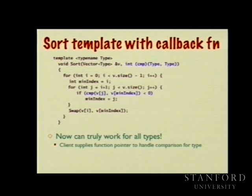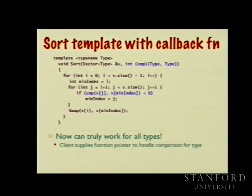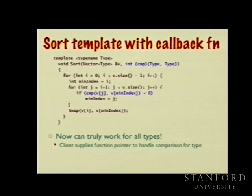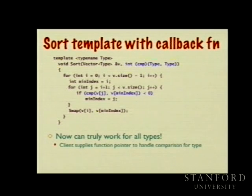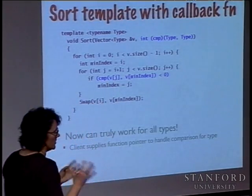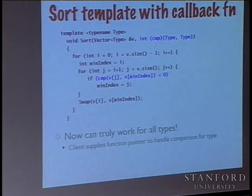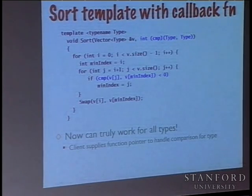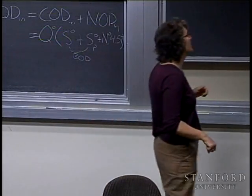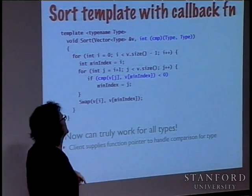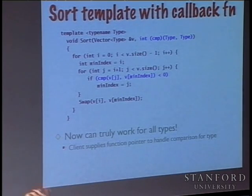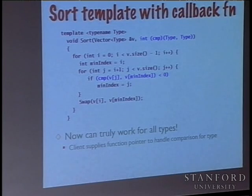The change highlighted in blue is that rather than directly taking v[j] and v[min_index] and comparing them using less-than, we're using a callback function. The parameter 'cmp' (or compare) takes two parameters of the client's type and returns an int — zero, negative, or positive — representing their ordering. Instead of a direct less-than expression, we invoke the client's callback on the two things we need to compare, and if the result is less than zero, v[j] precedes v[min_index], so we update min_index to j, then swap that small element to the front and repeat.